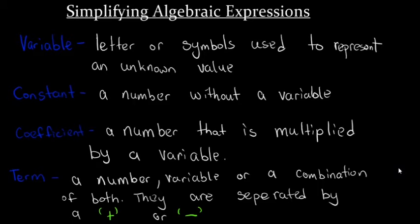Before we dive into that, let us define some key terms. A variable is a letter symbol used to represent an unknown value. A constant is a number without a variable. A coefficient is a number that multiplies a variable, and a term is a number, a variable, or a combination of both, separated by an addition or subtraction sign.